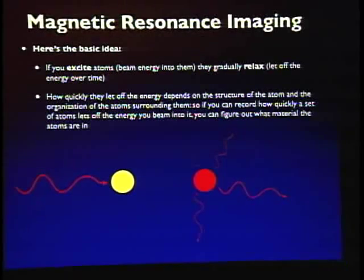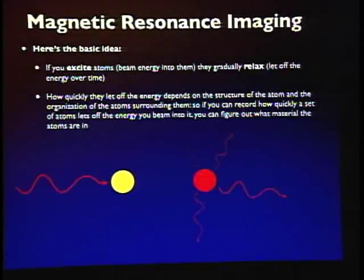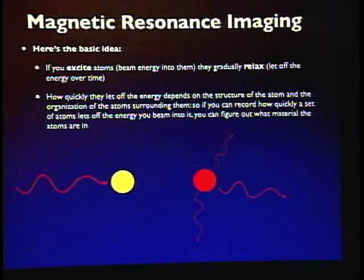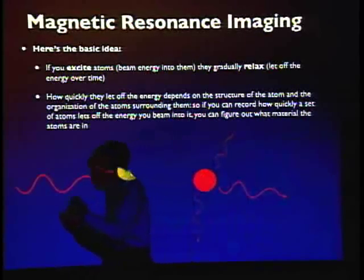Now let's go back to the basic physics of MRI. We have atoms. If you excite an atom by beaming energy into it, we know from physics that the electrons move into higher orbitals. However, over time, atoms tend to move toward lower energy states — they will absorb that energy, become excited, and then emit it as fast as they can. How quickly they release the energy depends on the structure of the atom and how it is organized in tissue.